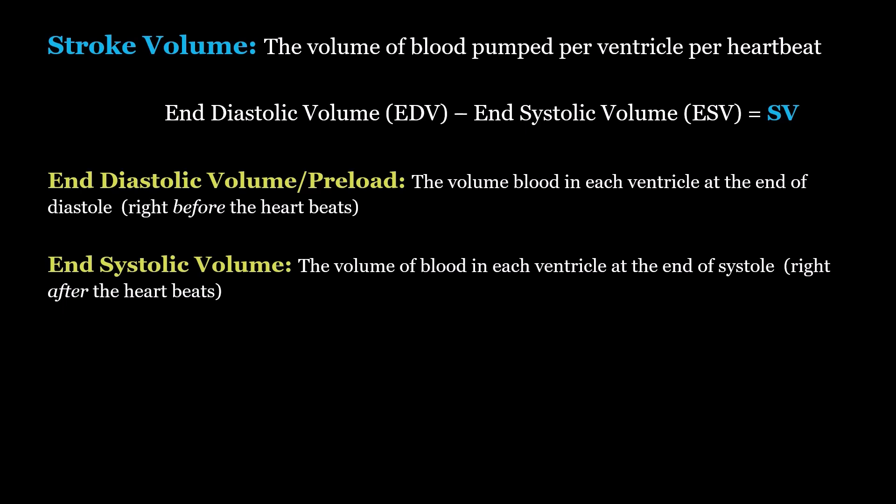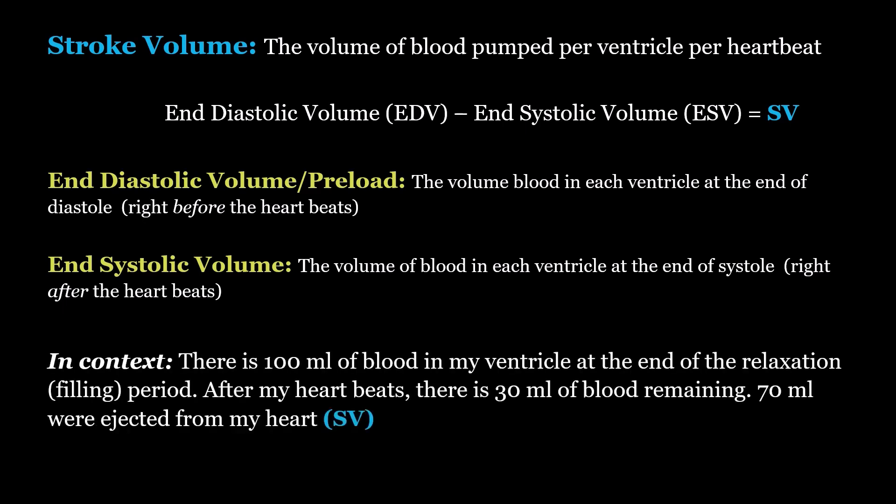End-systolic volume is the volume of blood in each ventricle right after the heart beats — how much blood is left over. So if I have 100 milliliters of blood in my ventricle at the end of relaxation and my heart beats and there's 30 milliliters remaining, that means 70 milliliters were ejected from my heart, which is my stroke volume.